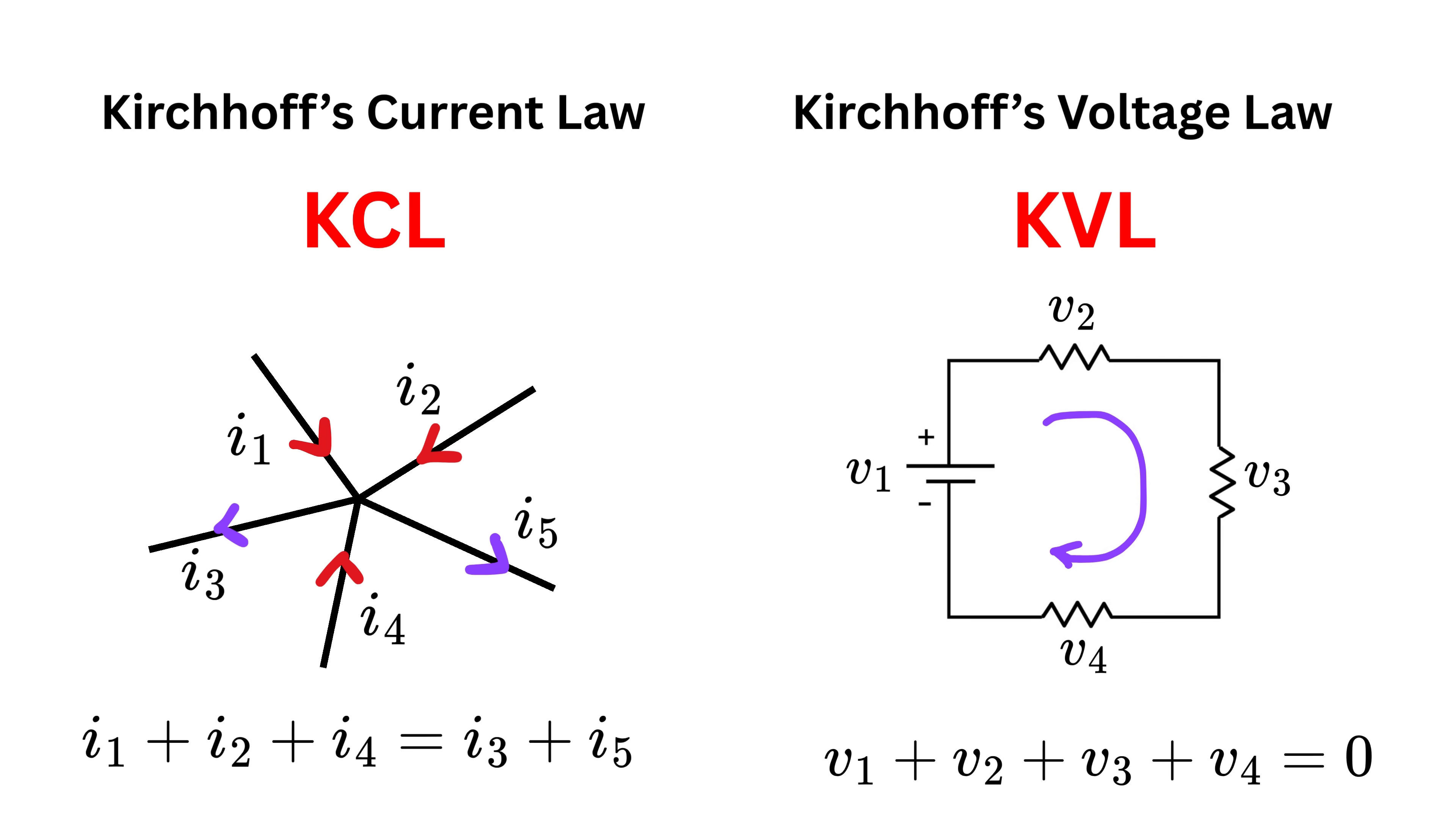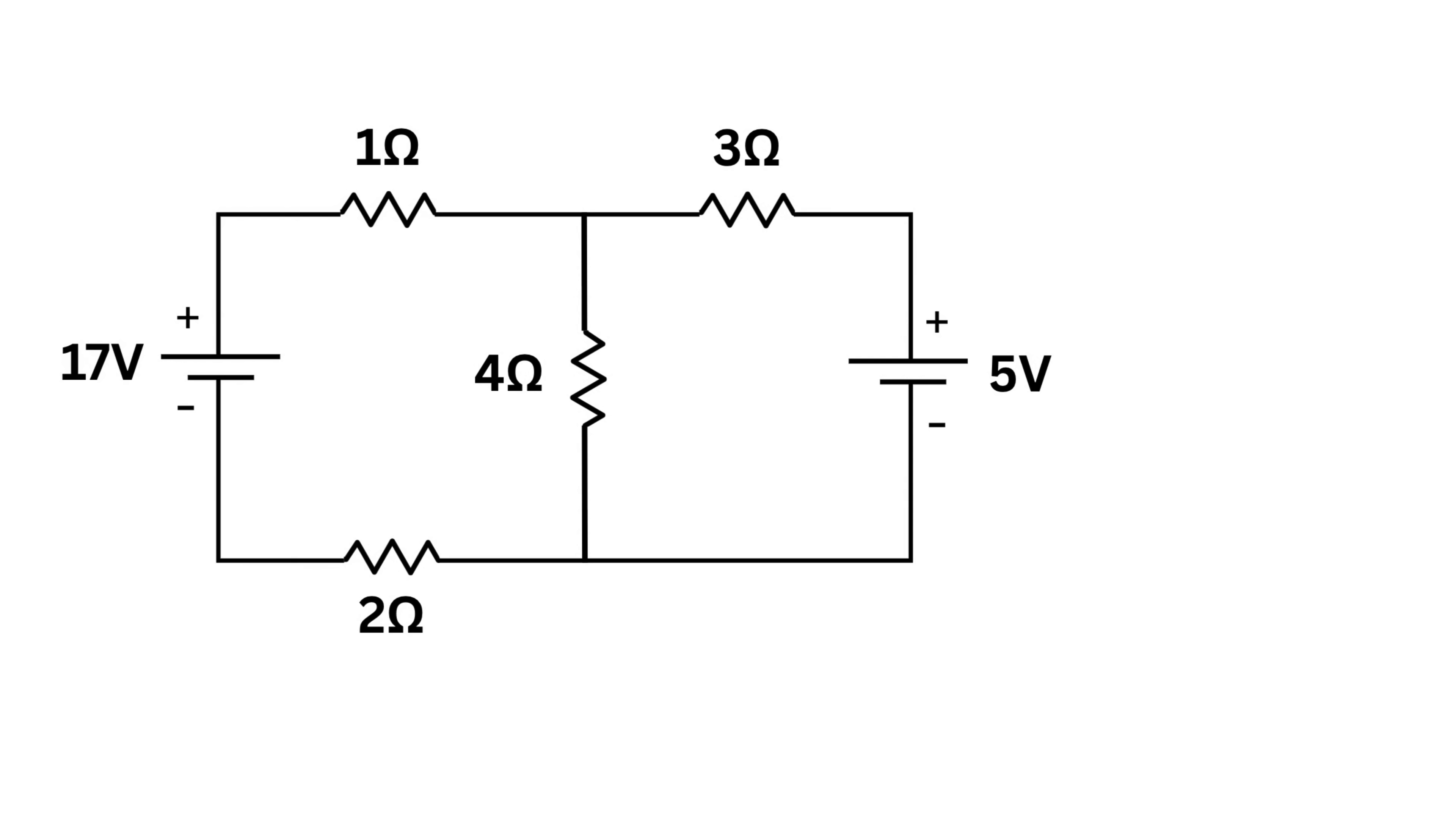As a first step, we choose a reference node, also called the ground, and we assume its voltage to be zero volts. This node serves as the baseline and all other node voltages will be measured with respect to it. For this case, let us select this node as zero volts.